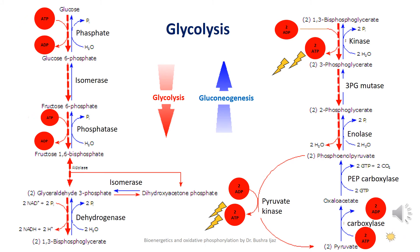Let's talk about glycolysis. Cells derive energy from nutrients such as glucose. The oxidation of glucose to pyruvate occurs through a series of reactions called glycolysis, represented by the red line in the diagram. The energy released during these oxidation-reduction reactions is used to synthesize ATP. The first step involves the addition of two phosphate groups to the glucose molecule at the expense of 2 ATP molecules — the first ATP is used when glucose is converted to glucose-6-phosphate.